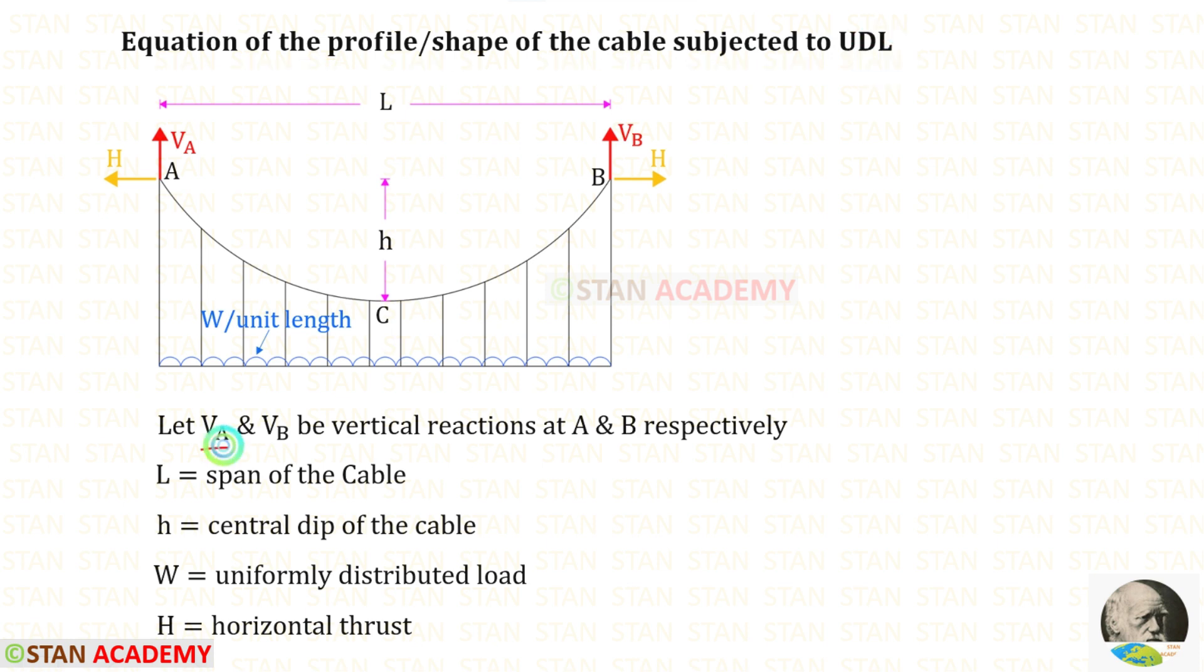Let us keep Va and Vb as the vertical reactions in the points A and B respectively. L is the span of the cable. h is the central dip of the cable. W is the uniformly distributed load. H is the horizontal thrust.